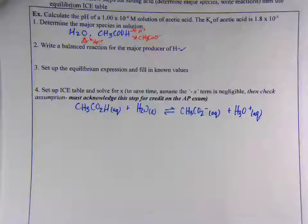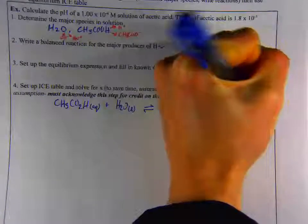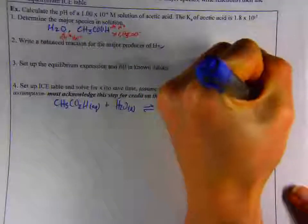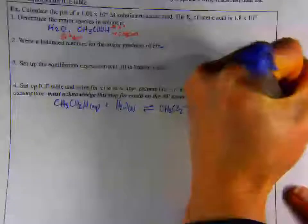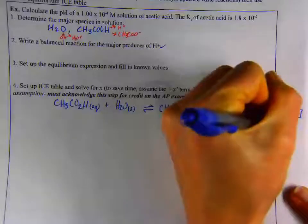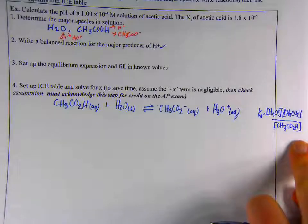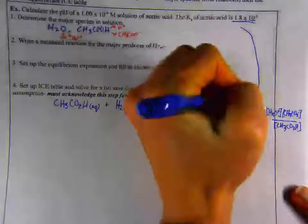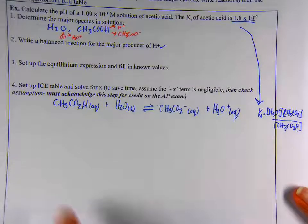Number three, set up the equilibrium expression and fill in known values. This is just like we did in chapter 13. I'm going to write my Ka expression. It would be the concentration H3O+ times the concentration of the conjugate base, all divided by the concentration of the weak acid. I leave water out because it's a pure liquid. The thing that I know is the Ka value. The problem tells me that Ka is equal to 1.8 times 10 to the negative 5.